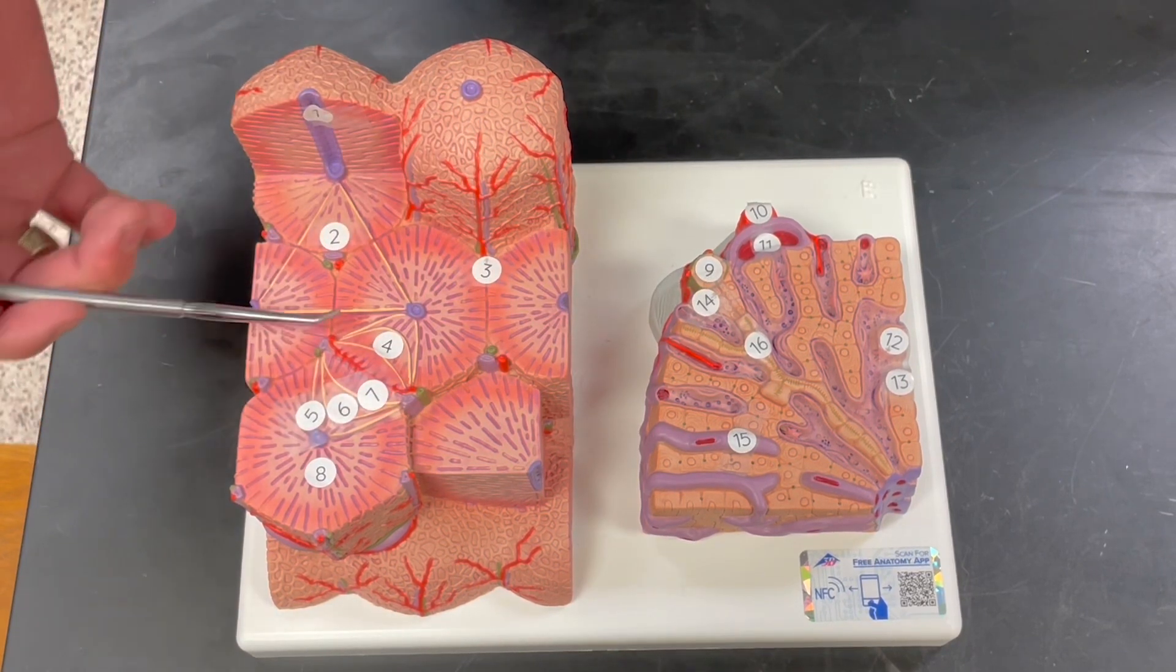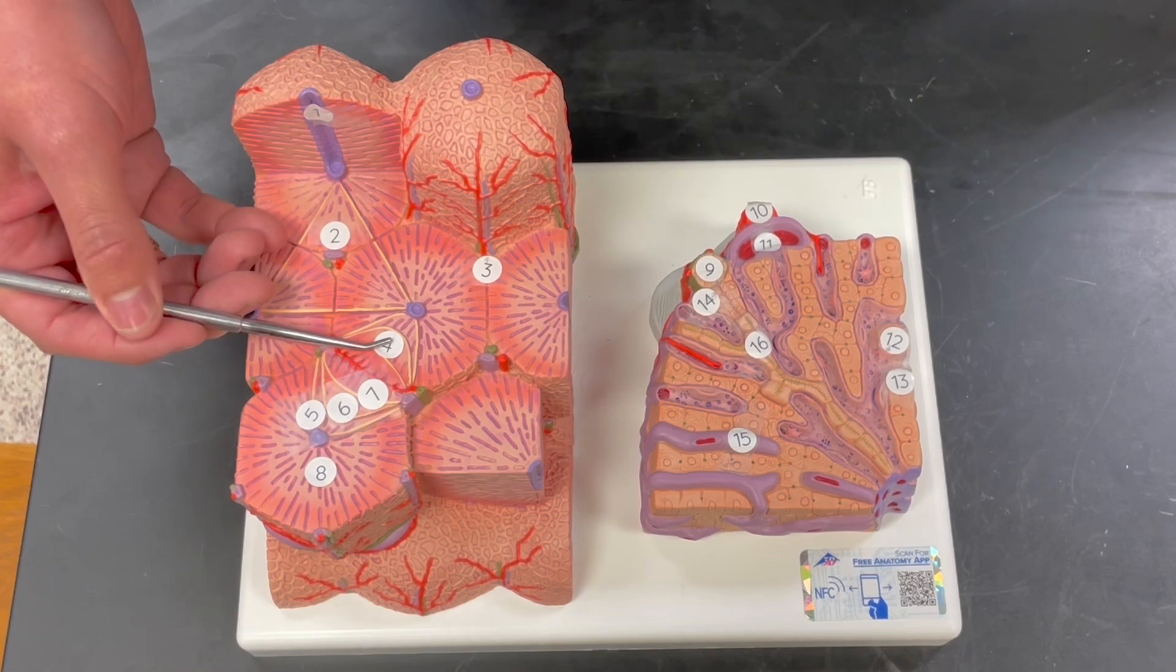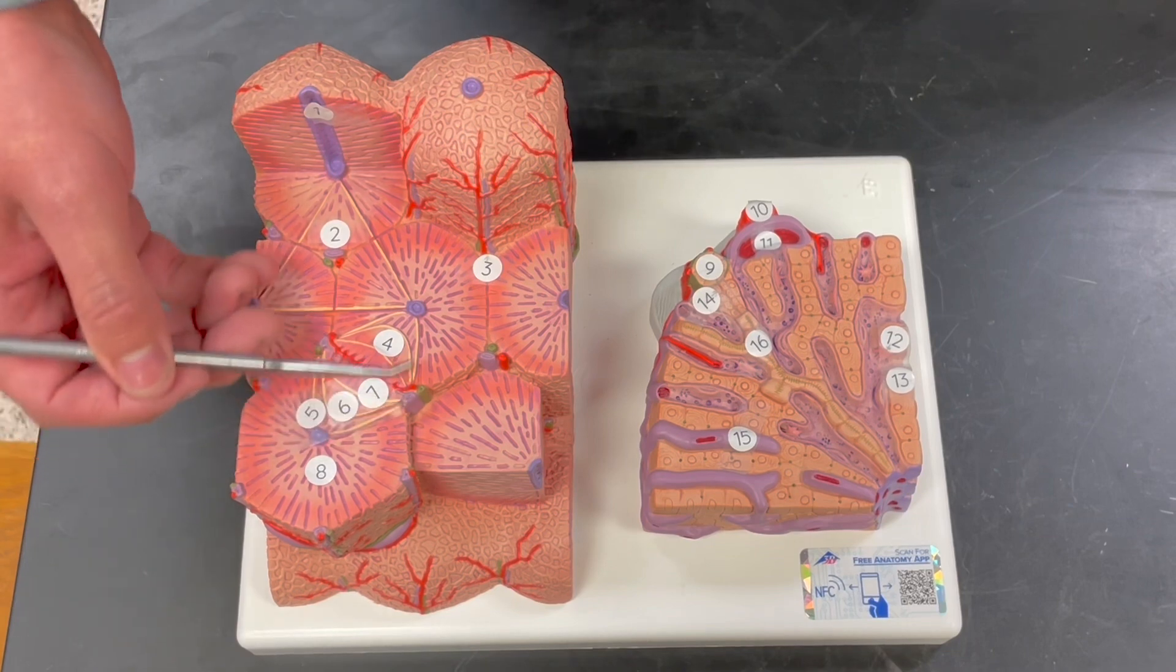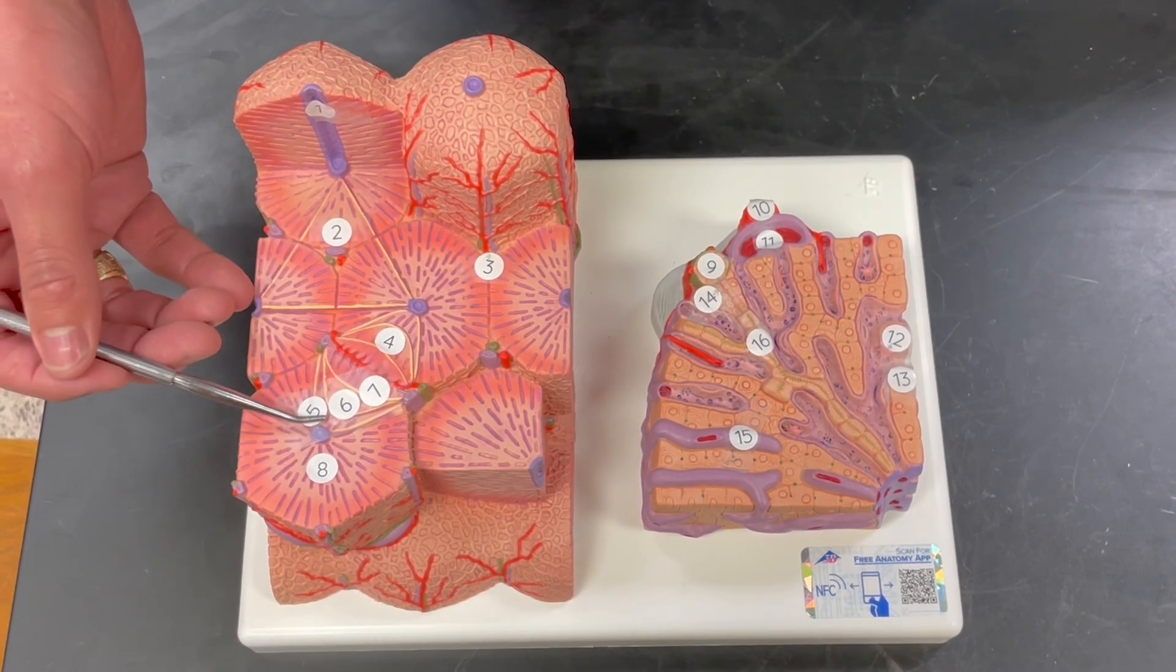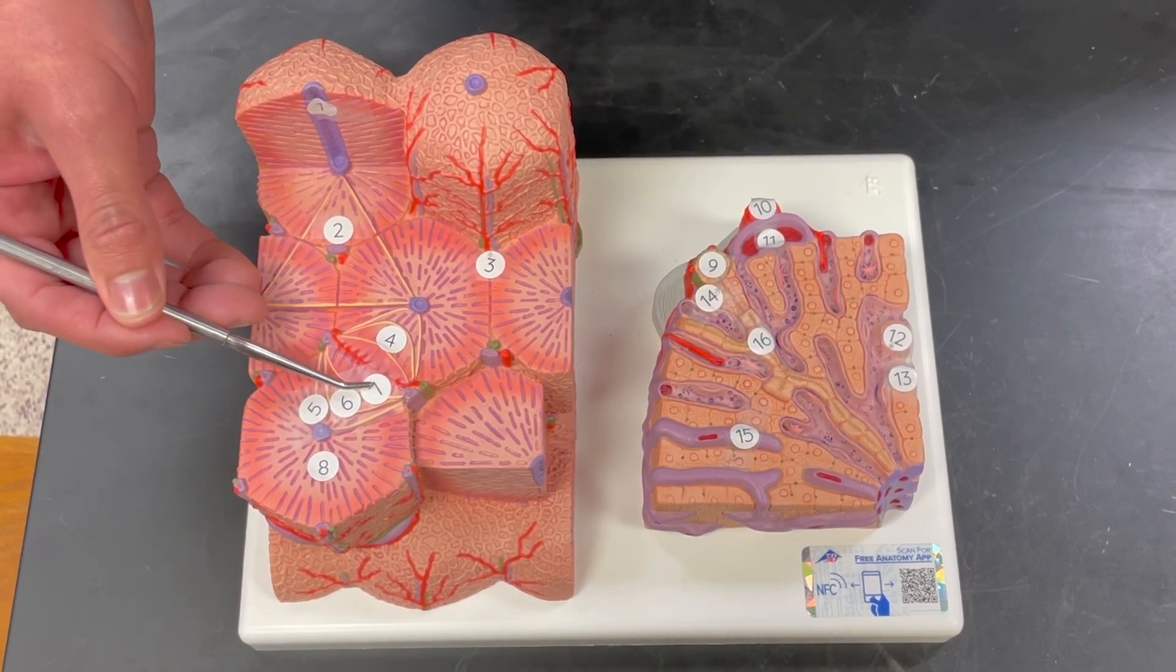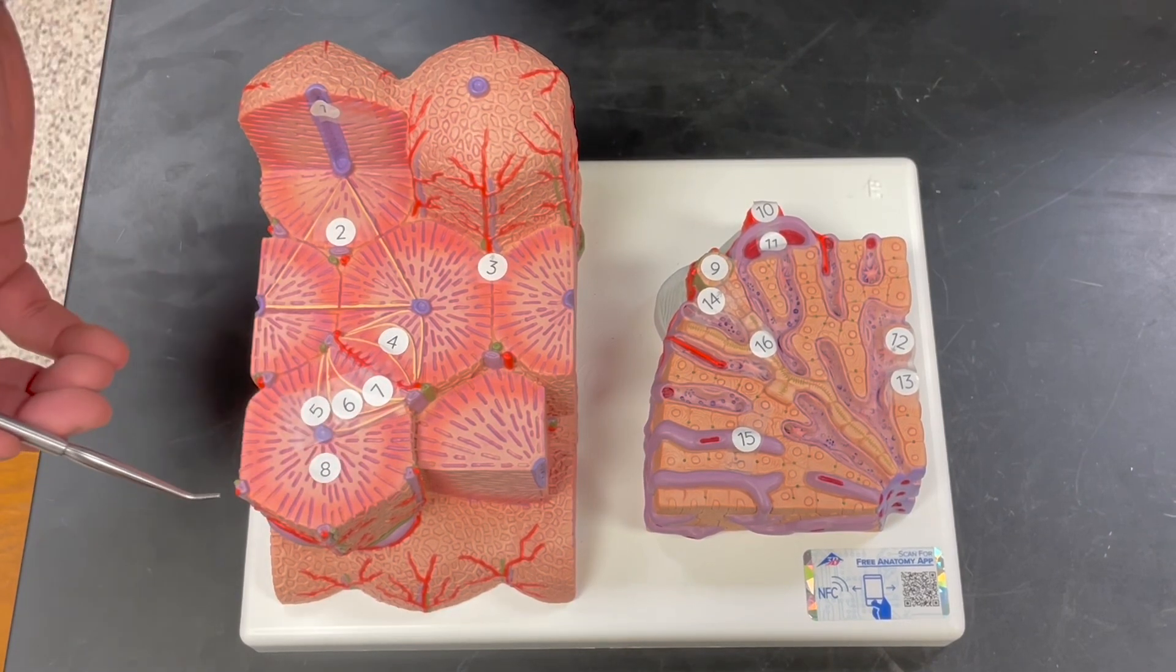Number four, this is what's known as the liver acinus. That includes all of this diamond shaped structure over here and the three different zones. Five is zone one, this is zone two, and this is zone three. Number eight, this is the classic liver lobule, shaped like a hexagon here.